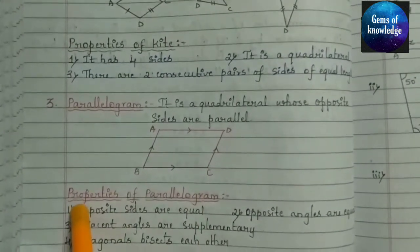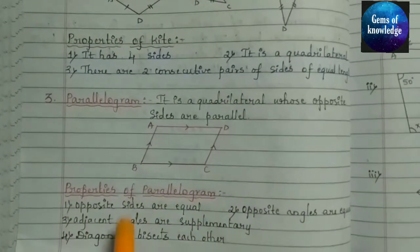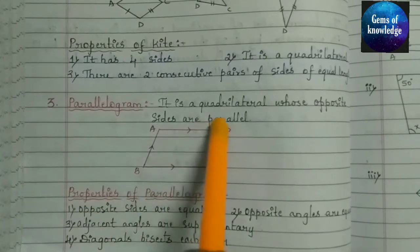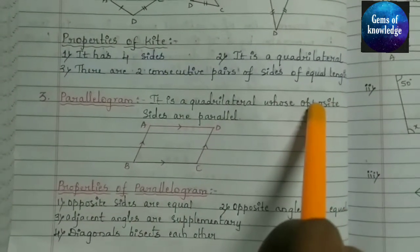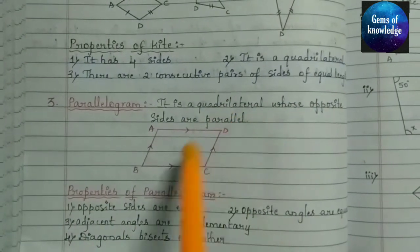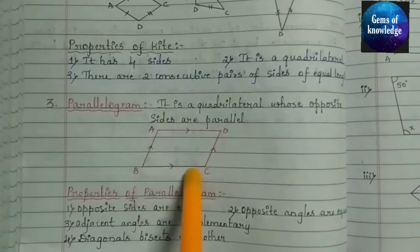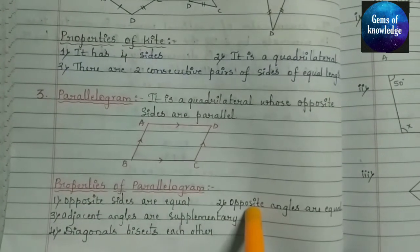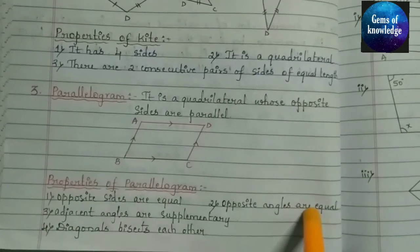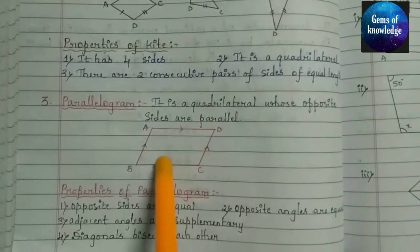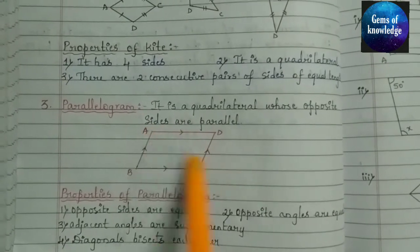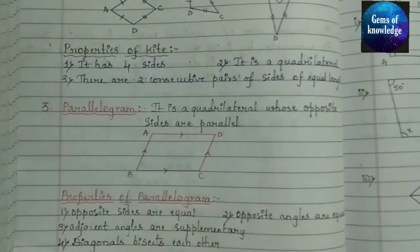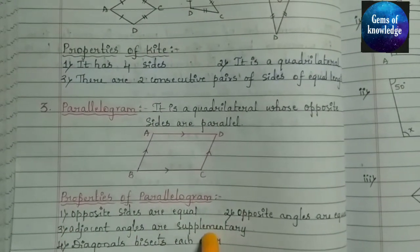Now we study the four properties of a parallelogram. The first property is the definition itself: opposite sides are equal. The second property is that opposite angles are also equal — if opposite sides are equal, obviously the opposite angles will be equal. The third property is that adjacent angles are supplementary.